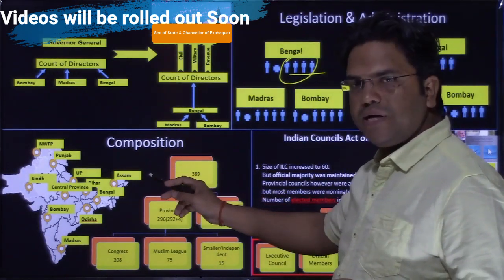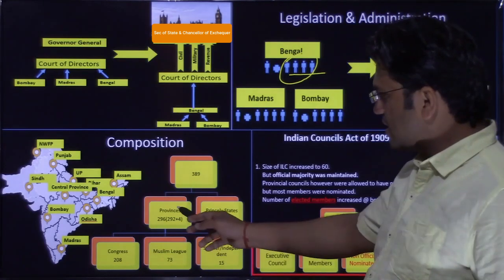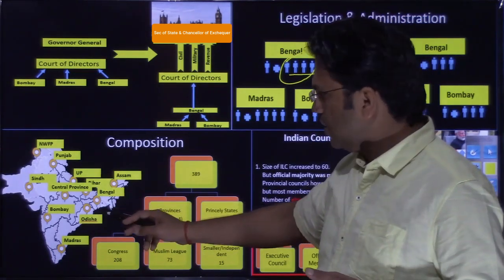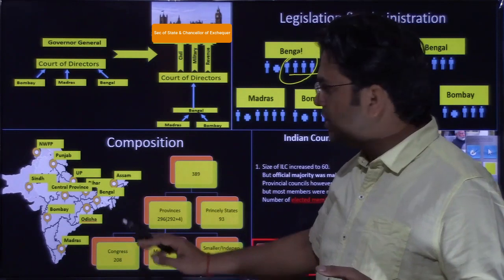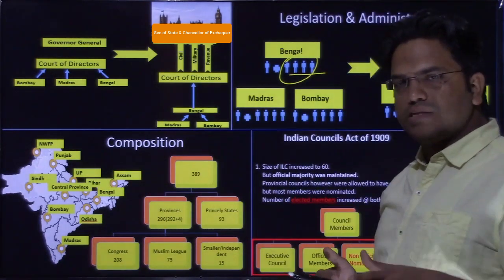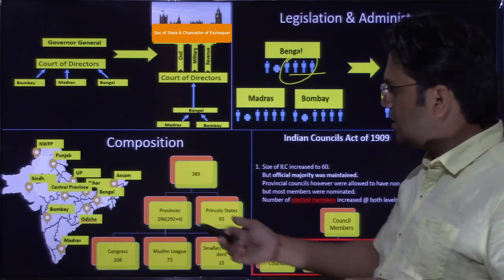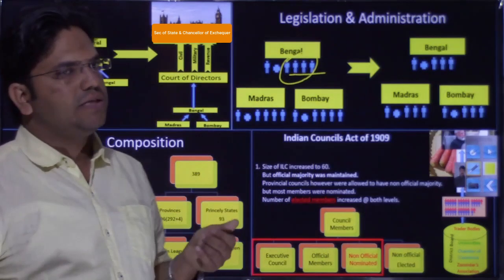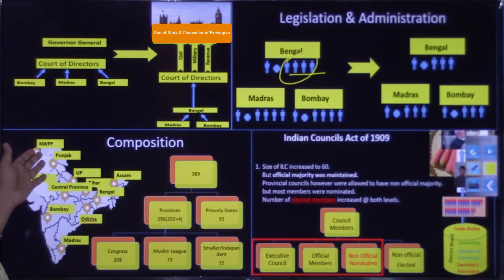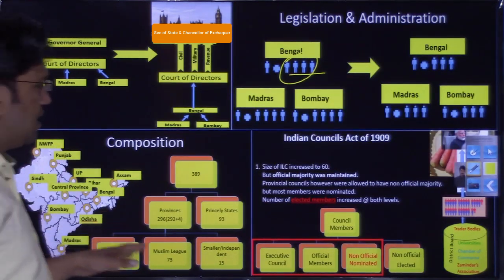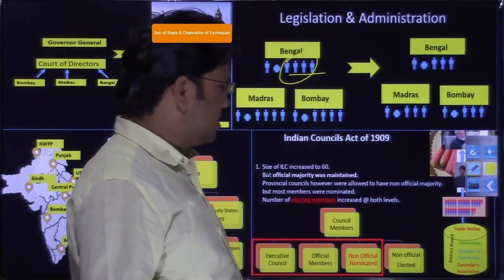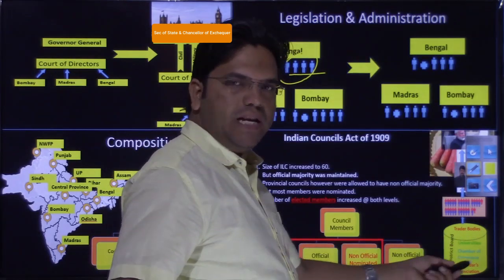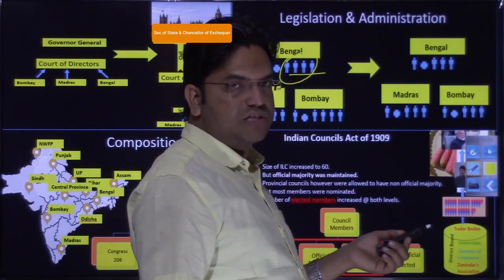This image is about the making of the Constitution — how seats were distributed, which provinces there were. This is a geographical visualization. When I say 'Sindh' or 'North-Western Frontier Provinces', these things should come to mind immediately. When discussing the Councils Act of 1909, we have covered the composition of the council and how elections would happen in a much better way.